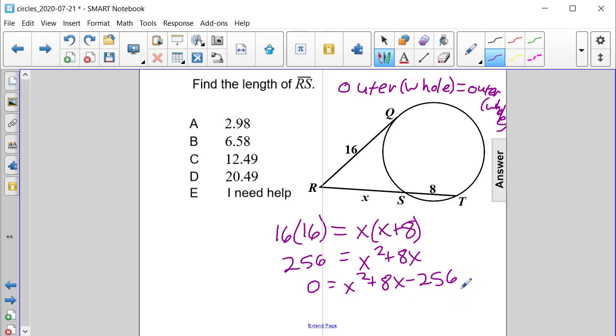Now are there factors of negative 256 that add up to positive 8? Unfortunately, there are not. So we need to use the quadratic formula to finish solving this problem.